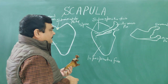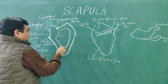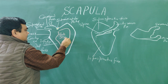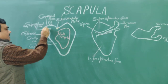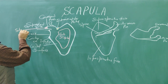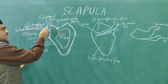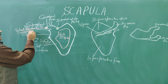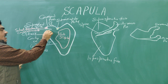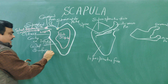Now for attachments: here you can see the origin of the subscapularis muscle. Here is the origin of two muscles — the short head of biceps brachii and coracobrachialis. From the supraglenoid tubercle, the long head of the biceps takes origin. And here at the infraglenoid tubercle is the long head of the triceps.